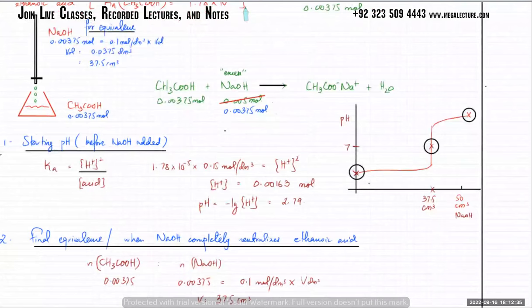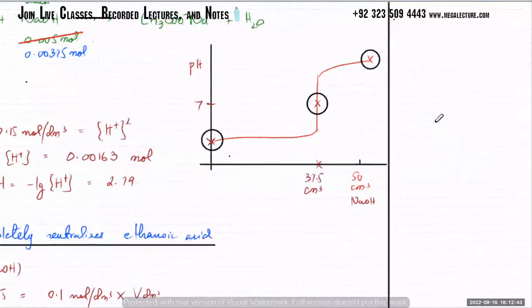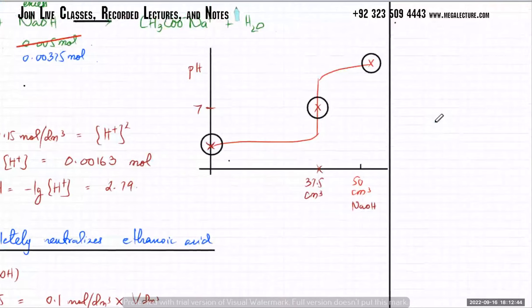The reason for it being an S-shaped curve is that it is a log graph. pH is log, so when you have log, the values change abruptly at a certain point. They don't change linearly.